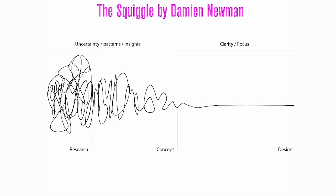You start off with lots of ambiguity, lots of uncertainty. And as you move through the design process, some of that ambiguity and uncertainty reduces as you move towards the end.